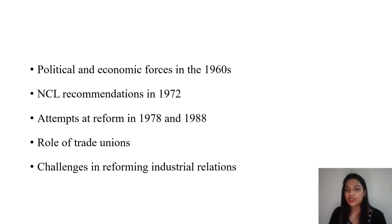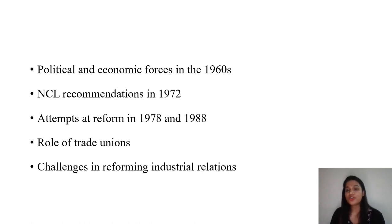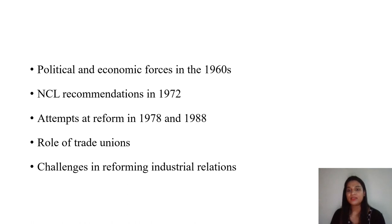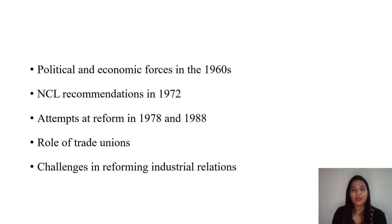The Industrial Disputes Act 1947 not only provided for the establishment of permanent machinery but also facilitated the settlement of industrial disputes. The Constitution of India also provided the freedom of association, meaning citizens now had the right to protect their interests according to public order. This gave workers the right to association, organization, and collective bargaining, and trade unions were on the rise. In the post-independence era, the situation of the country was at least comparatively better.